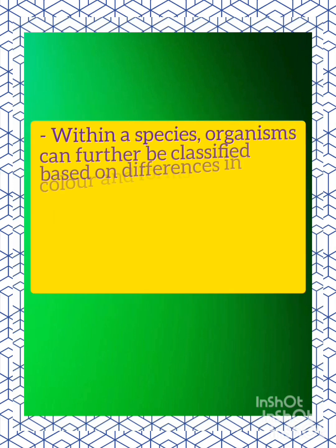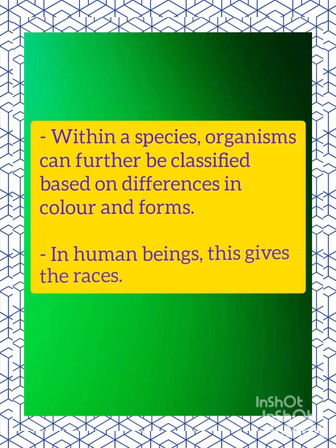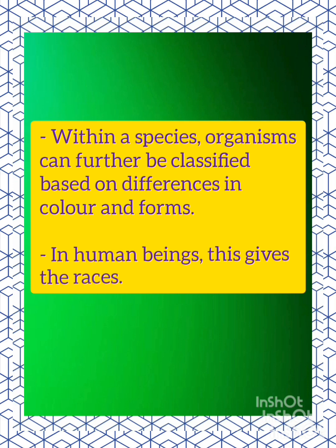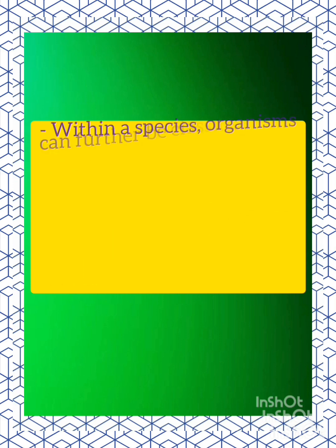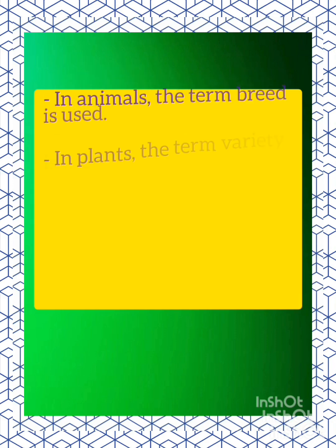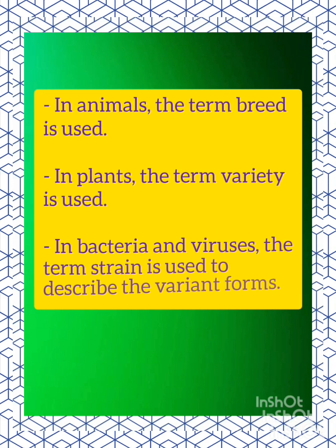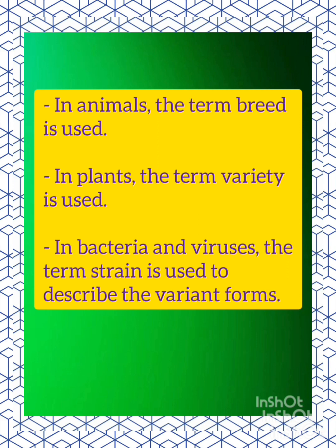Within a species, organisms can further be classified based on differences in color and form. In human beings, this gives the races. In animals, the term breed is used. In plants, the term variety is used. In bacteria and viruses, the term strain is used to describe the variant forms.